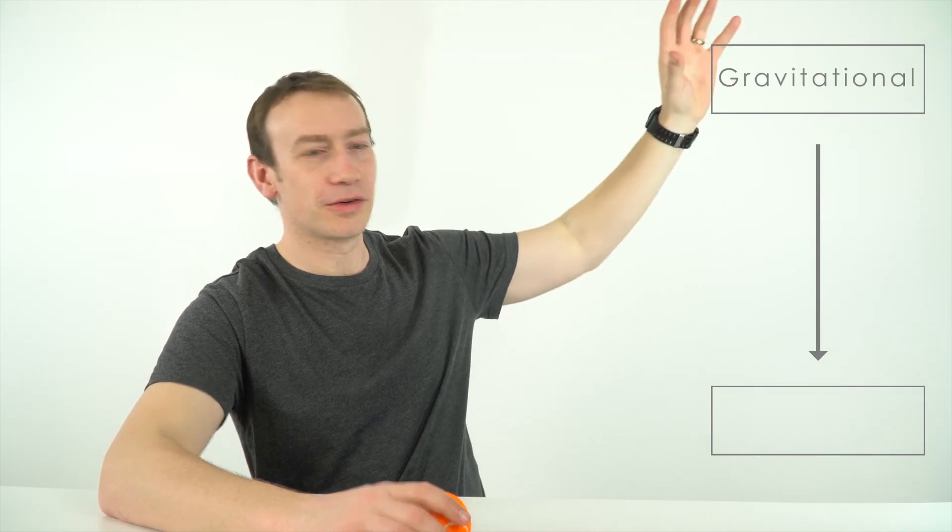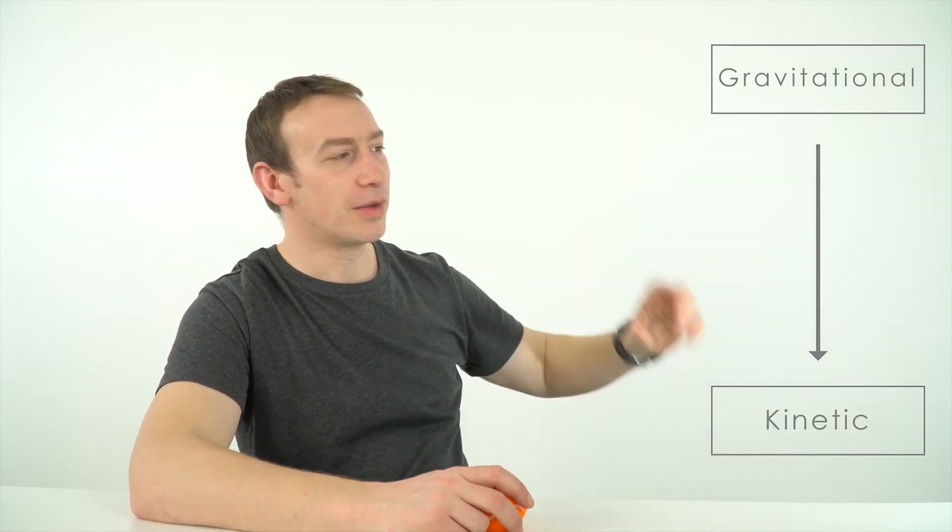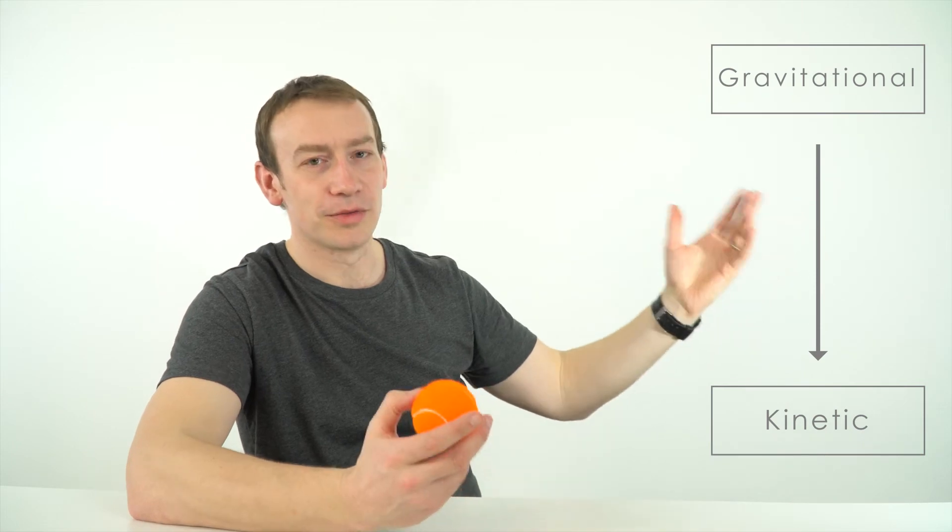Now to maybe do this as a diagram, you might think about putting your stores in boxes, so we've got maybe the store at the start, the store at the end, and to show there's a transfer we might do that with an arrow. So we can maybe just have our gravitational in a box, our kinetic in a box, and then we have an arrow, and by the side of that we can then maybe label this mechanical.